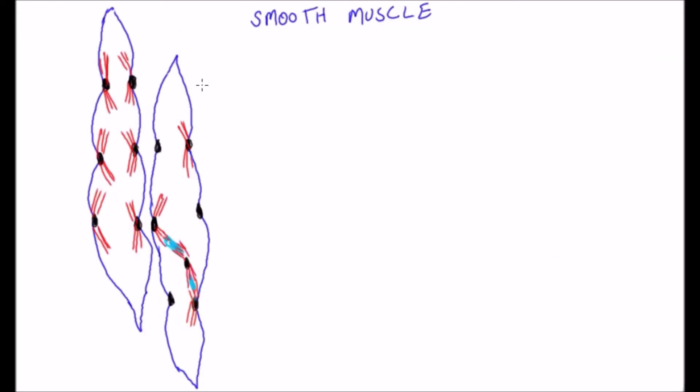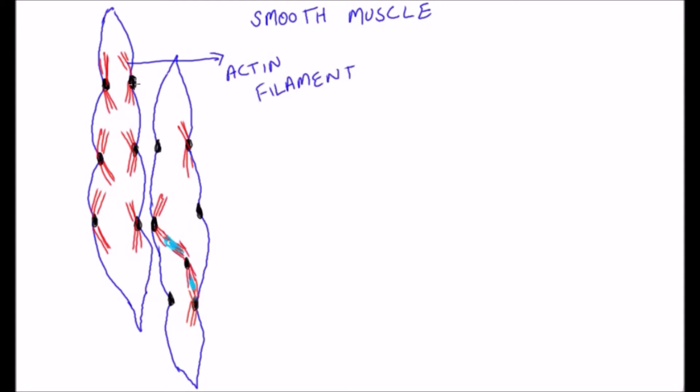Smooth muscles have large numbers of actin filaments attached to dense bodies. Some of these bodies are attached to the cell membrane and others are dispersed inside the cell. Some of the membrane dense bodies of adjacent cells are bonded together by intracellular protein bridges. It is mainly through these bonds that the force of contraction is transmitted from one cell to the next.